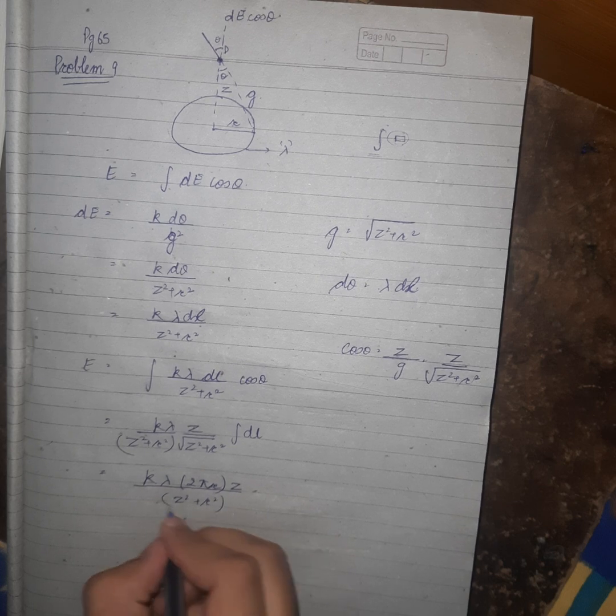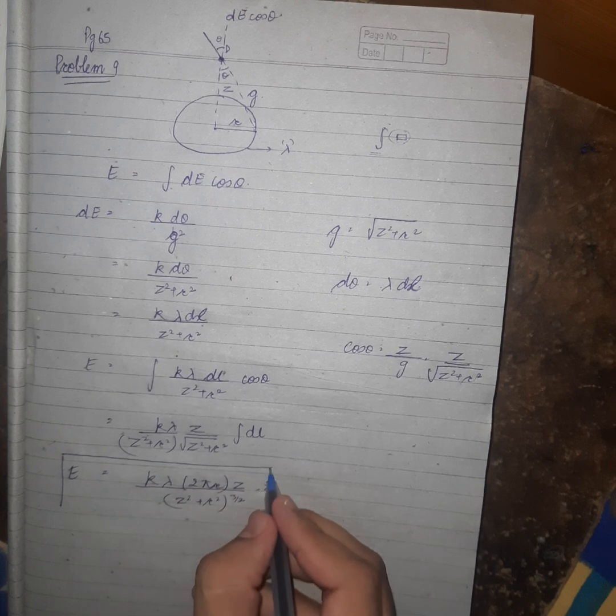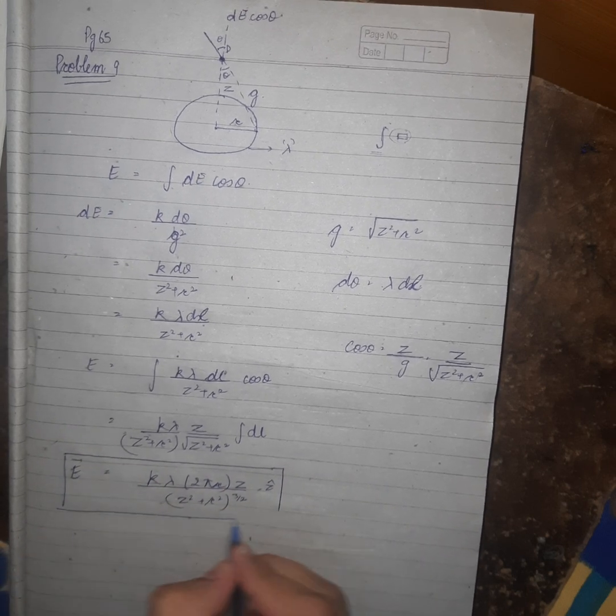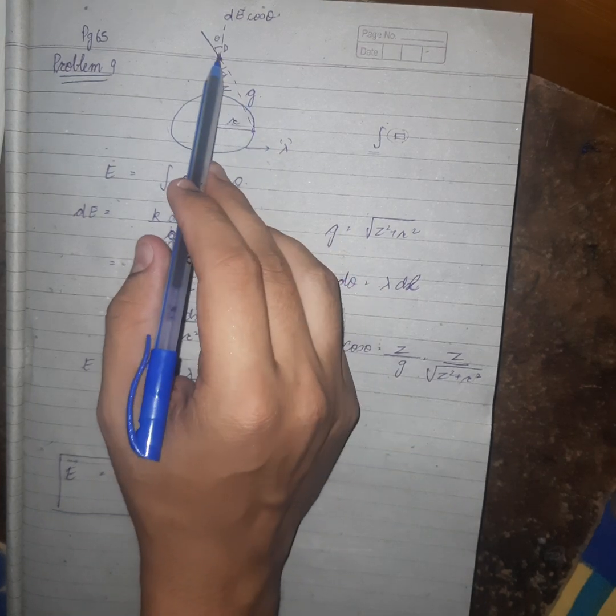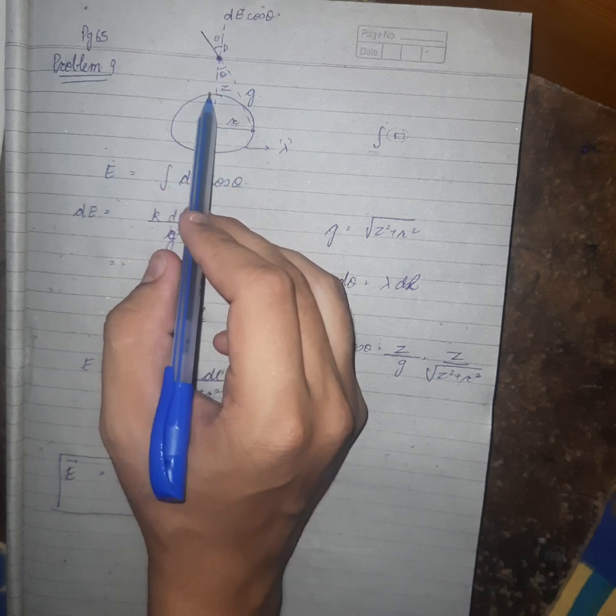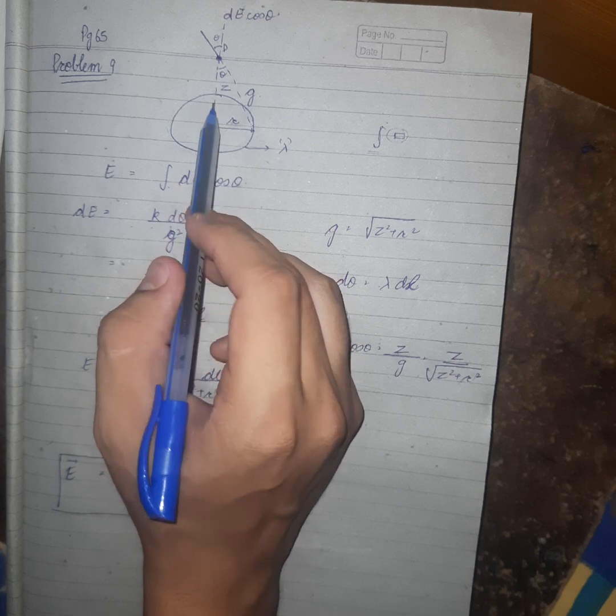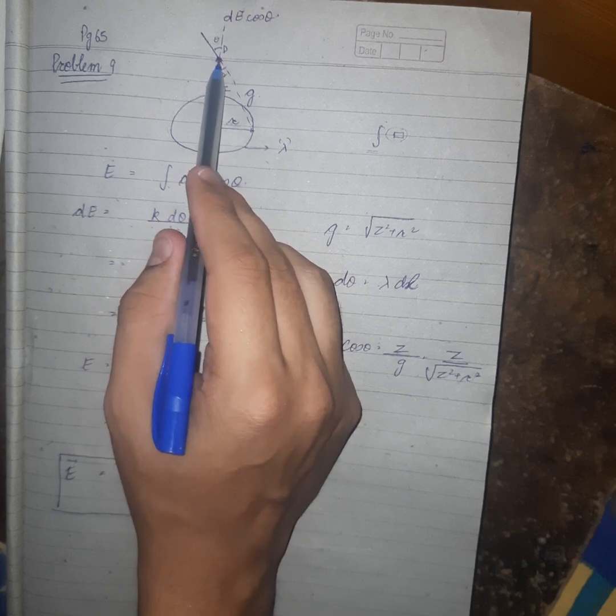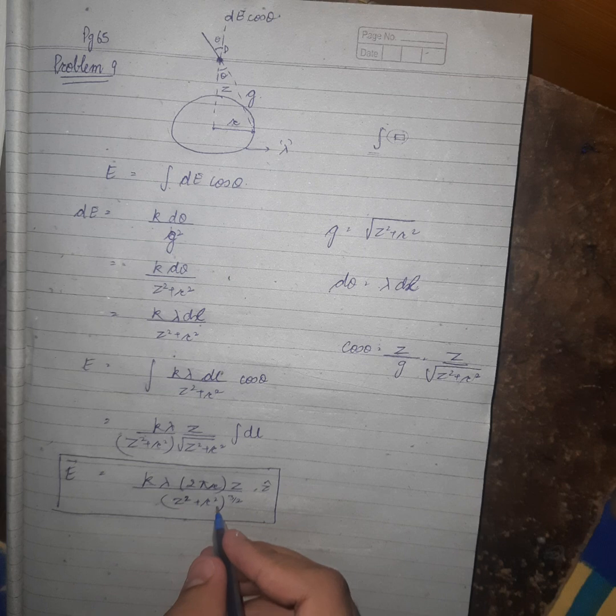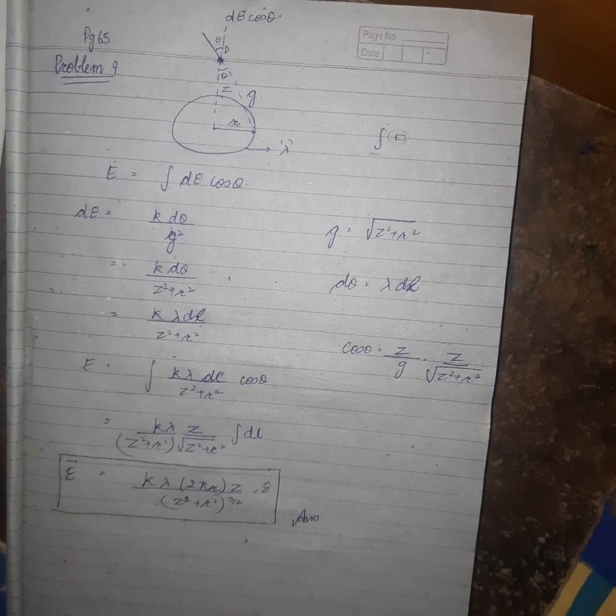So net electric field on a circular loop, z cap. The net electric field on a circular loop at a point P above, at a distance z above origin, or we can also say that it is the axial point of a circular loop or a ring. The same relation comes when we take an axial point on a ring. You may remember it from class 12 also. So this is the answer. See you in the next video, bye bye.